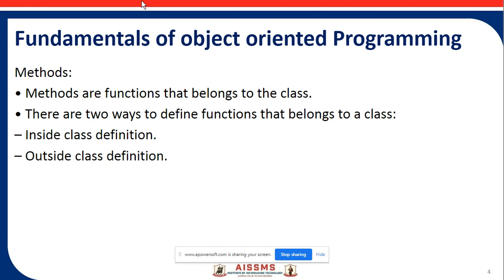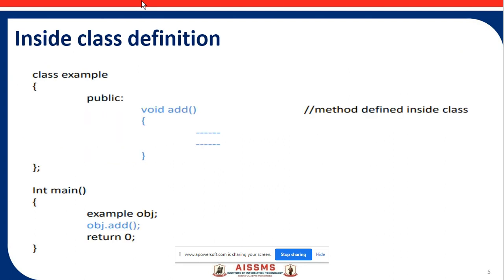For inside class definition, here is a class declared as class Example. The public access specifier is used for the method defined inside the class, and then in the main method the object is created with a zero value.